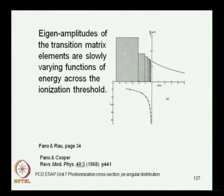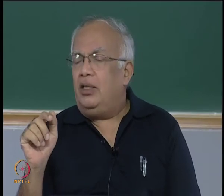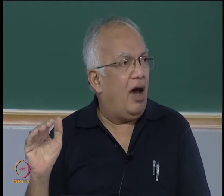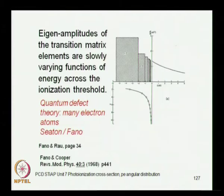In particular, what are called as eigen amplitudes of the transition matrix elements are slowly varying functions of energy across the ionization threshold. Near the ionization threshold, in a small energy region δE, the matrix element is almost independent of energy. This allows you to connect properties of the discrete spectrum with properties in the continuum, and there is a good bit of work done by Seaton and Fano.